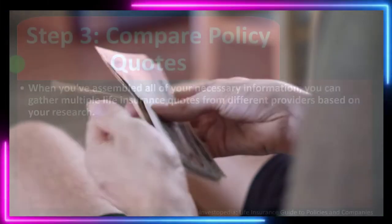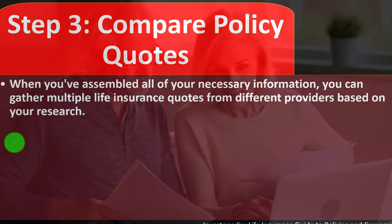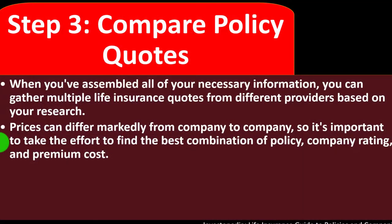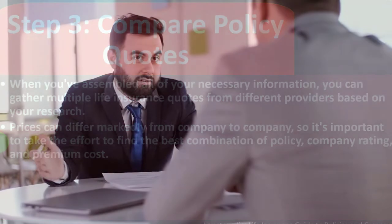We're on step number three from the prior presentation: compare policy quotes. When you've assembled all your necessary information, you can gather multiple life insurance quotes from different providers based on your research. Prices can differ markedly from company to company, so it's important to find the best combination of policy, company rating, and premium costs. If you're looking at more complex types of life insurance, the variance can change rapidly.